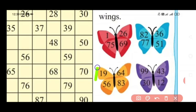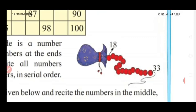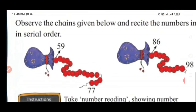Now children, look at this number chain. The first and the last number is given in this number chain. So the first number is 18 and the last number is 33. We will recite the numbers after 18 till the number 33. So let's start.